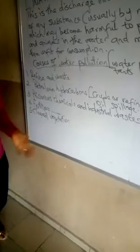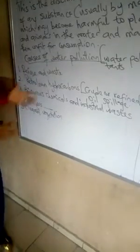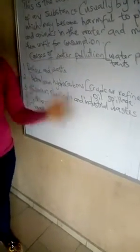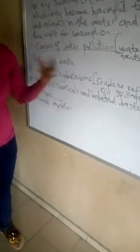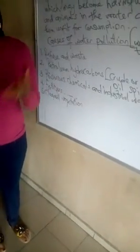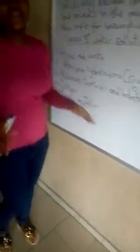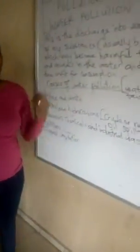The second pollutant of water is petroleum hydrocarbons, crude or refined, from oil spillage. Vandalization of pipes and drilling activities are ongoing. When these petroleum hydrocarbons are spilled into water bodies, it builds up heavy chemicals in the water system and cuts off the oxygen supply, making animals and plants in the water bodies die out.